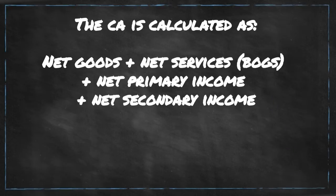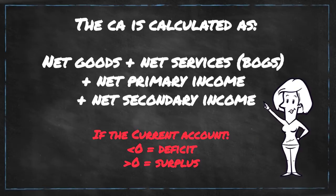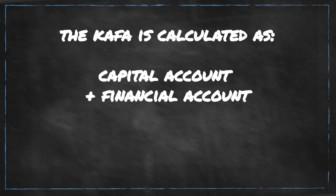If the solution is a negative number or less than zero, this means that there are more outflows of money leaving the country than money coming in, and we call this a deficit. If the solution is a positive number or greater than zero, this means there are more inflows of money entering the country and we call this a surplus. To calculate the CAFA, you add the balances on the capital account to the financial account.